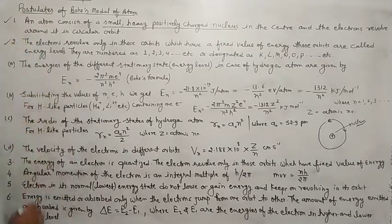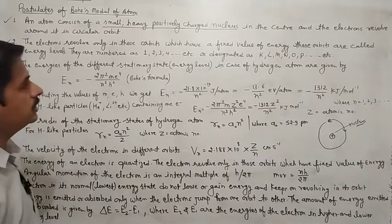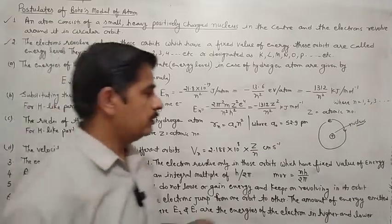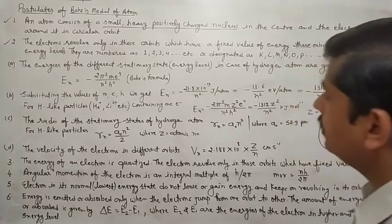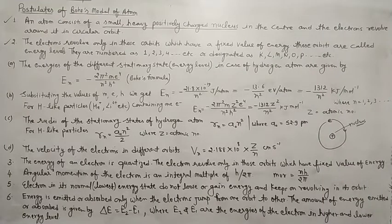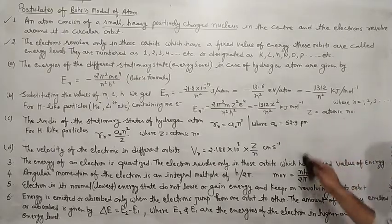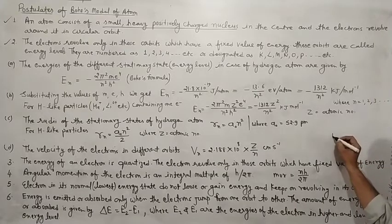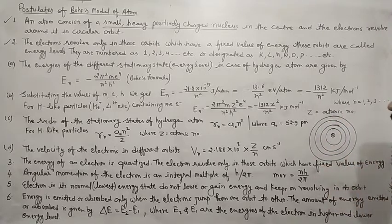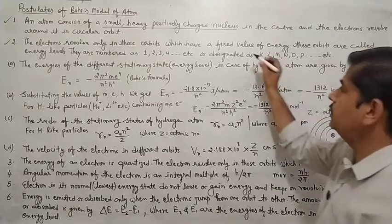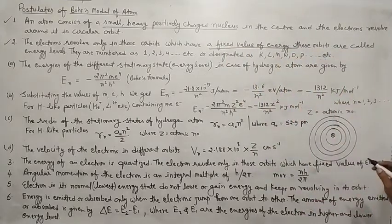Second postulate is: electrons revolve only in those orbits which have a fixed value of energy. Electron kewal unhi orbit mein revolve kerta hai jinki energy fix hoti hai. And these orbits are called energy levels. In orbits ko hum energy level kehte hain. They are numbered as 1, 2, 3, 4, etc., or designated as K, L, M, N, O, P. Isne ka, electron jinn circular path mein revolve kerta hai — yeh humare paas nucleus hai, aur yahan mein kuch circular path bana raha hai. Yeh circular path hain jahan electron revolve ker raha hai. Toh yahan kaha gaya hai ki yeh jo orbits hain, inki jo energy hai, they have fixed value of energy.